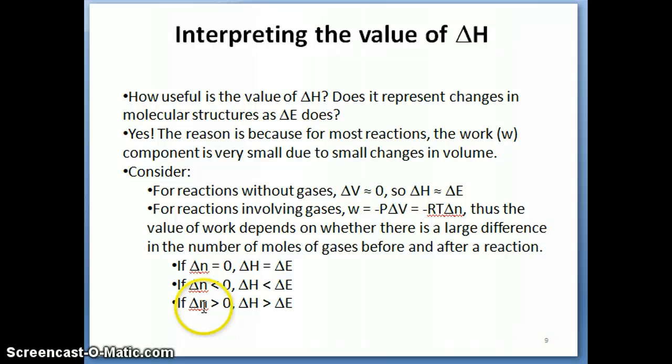And vice versa, if your delta n is bigger than zero, which means you produce more gas in your product than you have in your reactant, then your delta H would be greater than delta E, not positive, greater than delta E. So those are the three different situations that you have when you're dealing with gases.